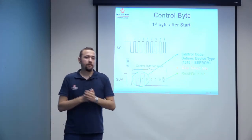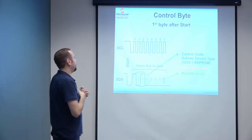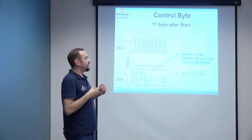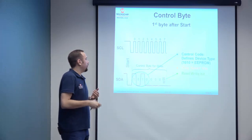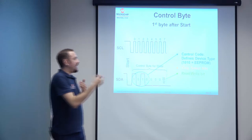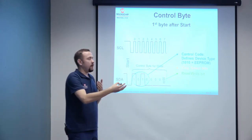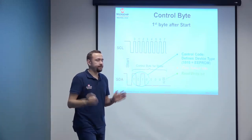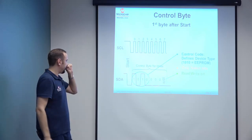Last but not least, we have the read-write bit, which is perhaps the most important bit in the I2C scenario. Rather than thinking of it as defining read or write operations, keep in mind that it signifies the direction in which data is flowing on the bus. If data flows from master to slave, we have the write direction. If data flows from slave to master, we have the read direction.